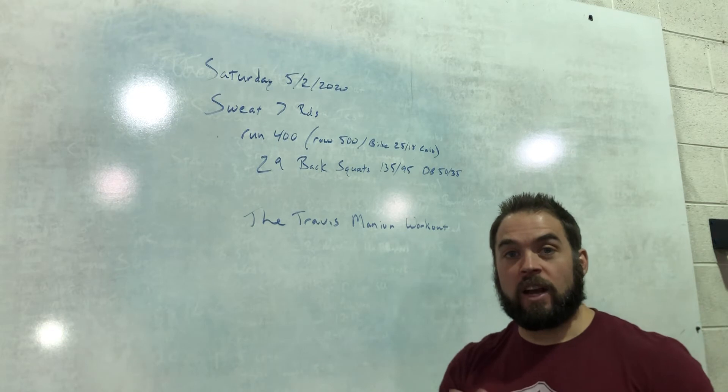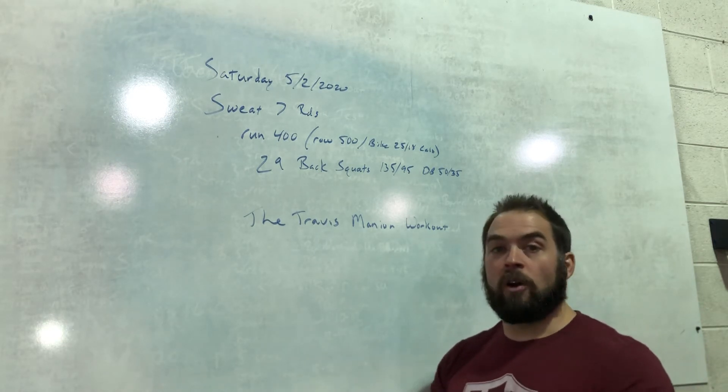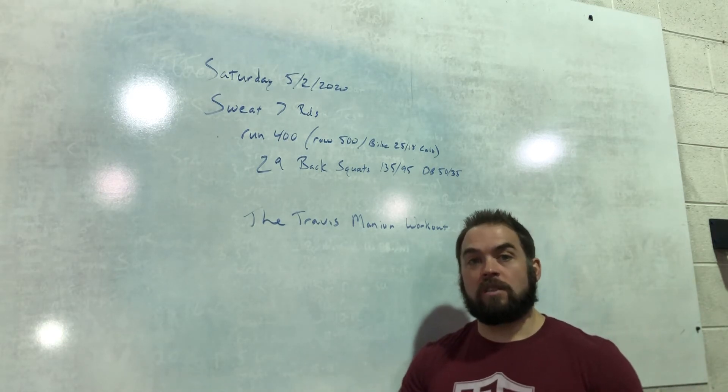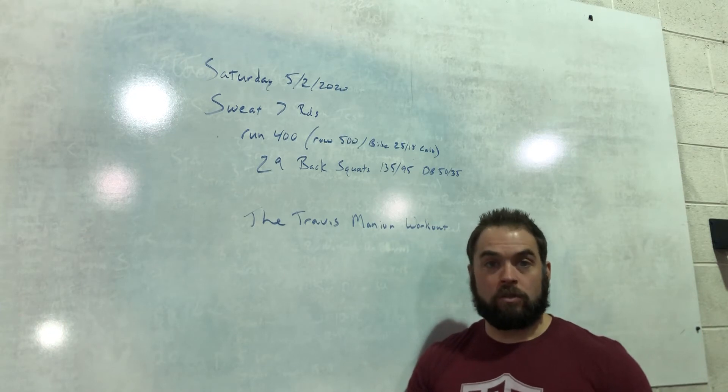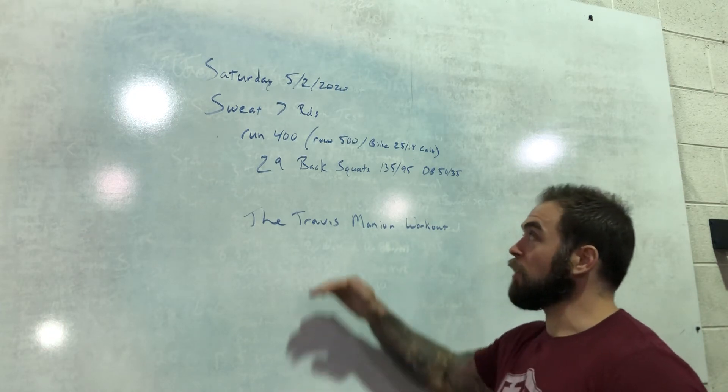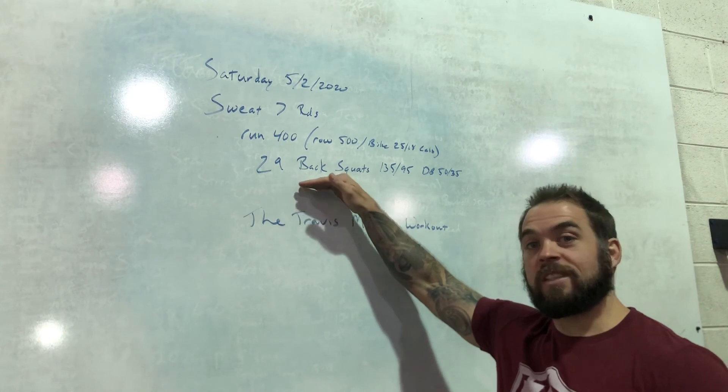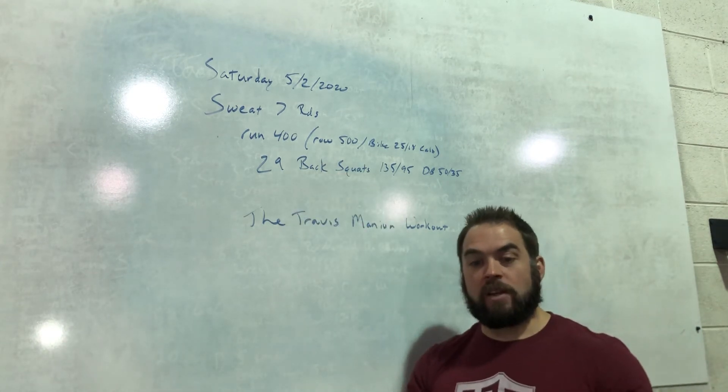25 calories for guys, 18 calories for ladies. If you're gonna do this with a partner, everybody does the bike run or row. Okay, you can split up the squats. 29 back squats. Now when we did this down in Philly, that bar came from the ground.